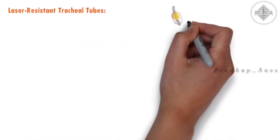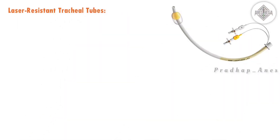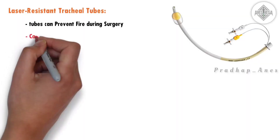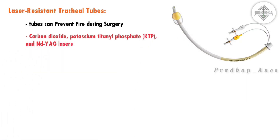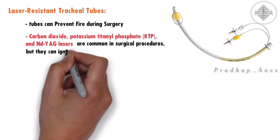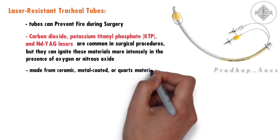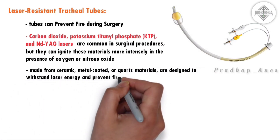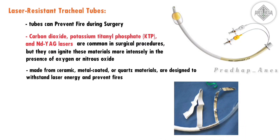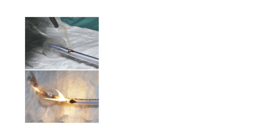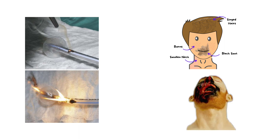Laser-resistant tracheal tubes are designed to prevent fire during surgery. Tracheal tubes made of plastic, silicone, or rubber can be easily damaged by laser beams, potentially leading to fires. Carbon dioxide, potassium titanyl phosphate, and Nd:YAG lasers are common in surgical procedures and can ignite these materials more intensely in the presence of oxygen or nitrous oxide. Laser-resistant tubes, made from ceramic, metal-coated, or quartz materials, are designed to withstand laser energy and prevent fires. However, if the laser power is too high or application time is prolonged, even laser-resistant tubes can catch fire, resulting in serious airway burns and inhalation injuries.